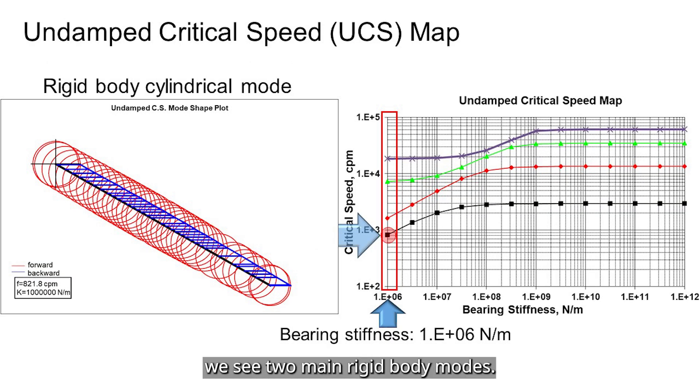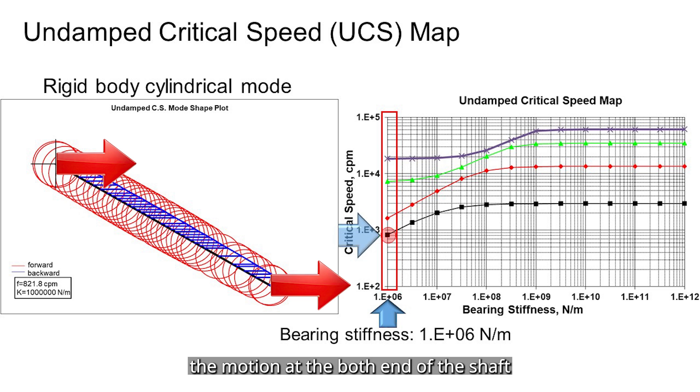At low stiffness, we see two main rigid body modes. The first mode is called cylindrical mode, or sometimes it is called bounce mode. In this mode shape, the motion at both ends of the shaft is in phase, meaning they move up and down together.